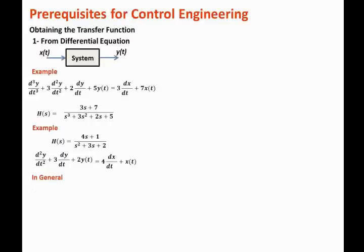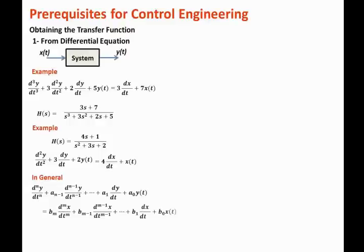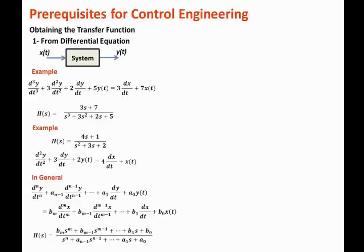We can generalize this concept. In general, if we have a differential equation with nth-order inputs and nth-order outputs, the transfer function will be a rational function where the denominator is an nth-order polynomial and the numerator is an nth-order polynomial as a function of s. This is a dual property: given the differential equation you can get the transfer function, or given the transfer function you can obtain the differential equation.